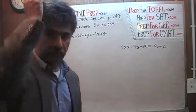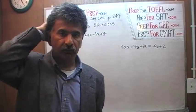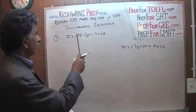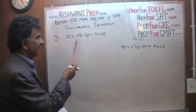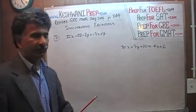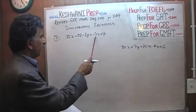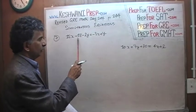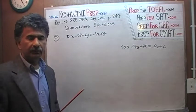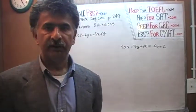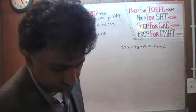Now the very first thing we need to do here, before we can solve them as simultaneous equations, is to bring this into a more civilized form. This is all over the place. We have to combine all the X's, combine all the Y's, and bring the constant to the other side. In other words, bring this equation into what is known as standard form. So let's do that.